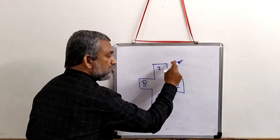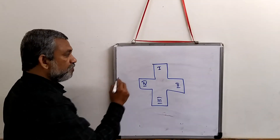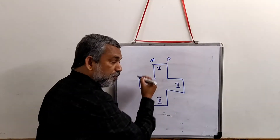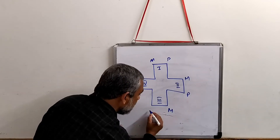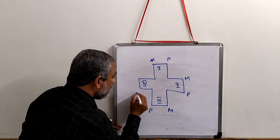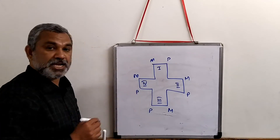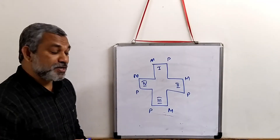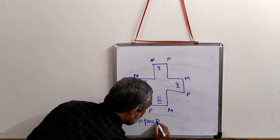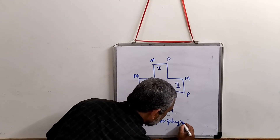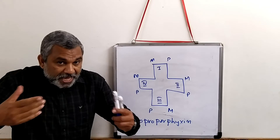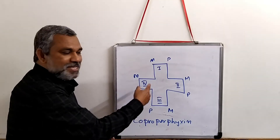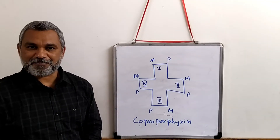In the simplified representation, positions are numbered 1 through 8. For example, you can place a methyl group at position 1, propionyl at 2, methyl at 3, propionyl at 4, methyl at 5, propionyl at 6, propionyl at 7, and methyl at 8 — a Type 3 arrangement. This forms the starting point of what is called coproporphyrin. Variation is introduced in the structure by replacing certain substituent groups, such as swapping in a methyl group.